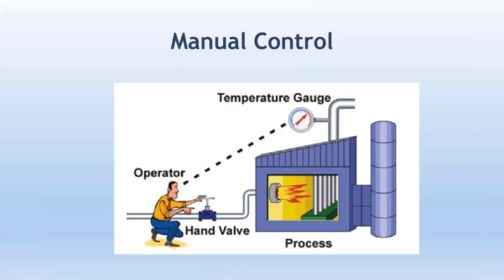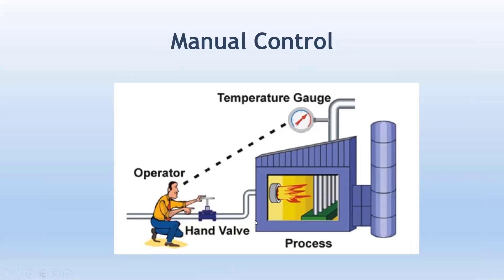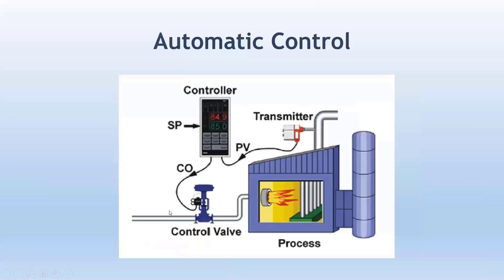PID does the same job in the best way. Instead of a human who needs to see the gauge and make a decision — a human-based decision — we now use a controller. Initially a dedicated controller was used, and eventually DCS and PLC were also adopted for that reason.